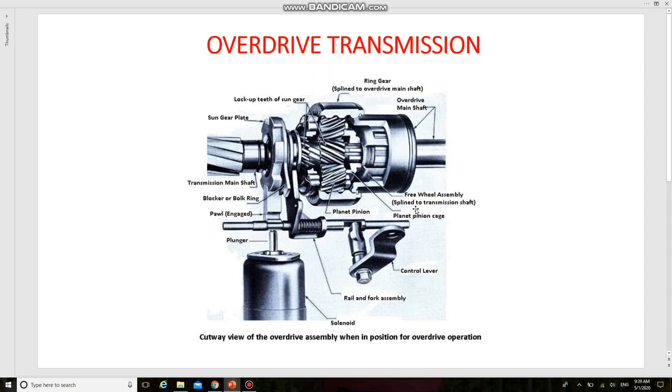Now we'll see the operation. If the driver wants to go in the overdrive when the car is traveling about a predetermined cutting speed, usually 35 to 55 kilometers per hour, he momentarily releases the accelerator pedal. If the driver wants to come out of the overdrive, he merely pushes the accelerator pedal past the full throttle position. If the driver wants to lock out of the overdrive, he pulls a control knob on the dashboard.